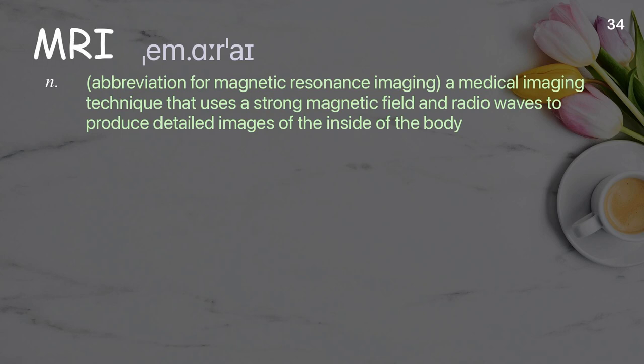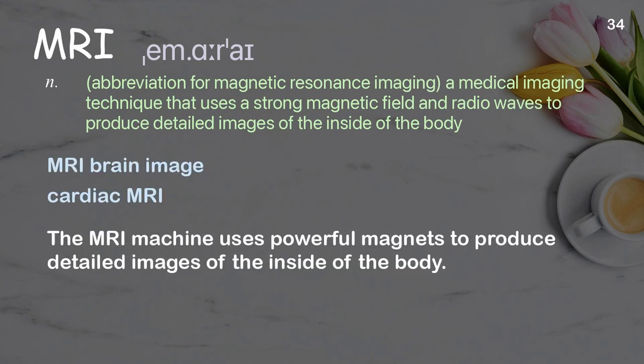MRI: abbreviation for Magnetic Resonance Imaging; a medical imaging technique that uses a strong magnetic field and radio waves to produce detailed images of the inside of the body. Examples: MRI brain image, cardiac MRI. The MRI machine uses powerful magnets to produce detailed images of the inside of the body.